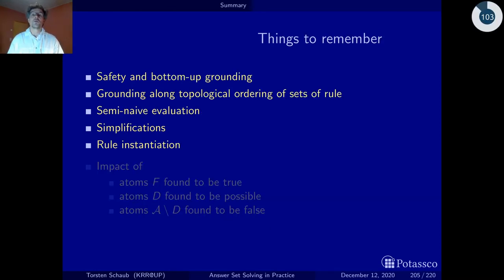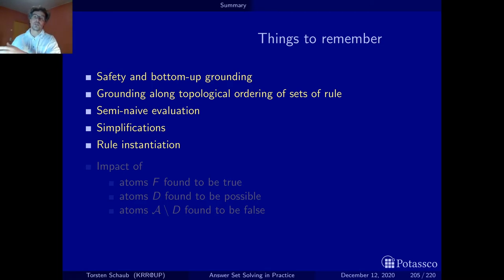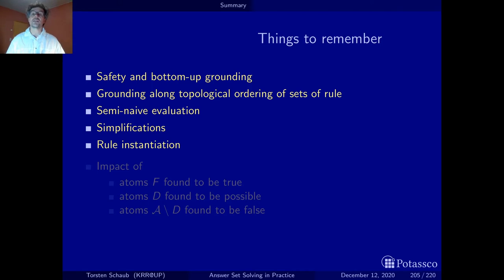What is important for you to remember is, first of all, the notion of safety and how it influences bottom-up grounding. That grounding actually works along a sequence of sub-programs induced by the topological order of the strongly connected components of the dependency graph — you may want to look this up. And also how semi-naive grounding works, which is a technique from databases, so we won't deepen that too much.